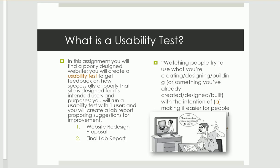During a traditional fall or spring semester, technical writing students usually create three separate documents for this unit, but I'm only asking you to complete two for this summer semester. Assignment 4.1 will be the usability test proposal, and assignment 4.2 will be a report where you give an evaluation of your findings.